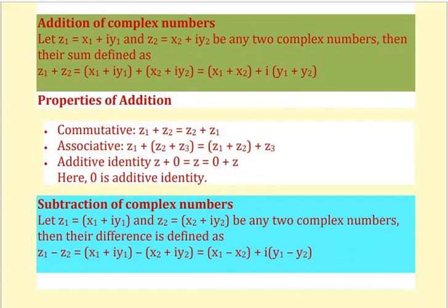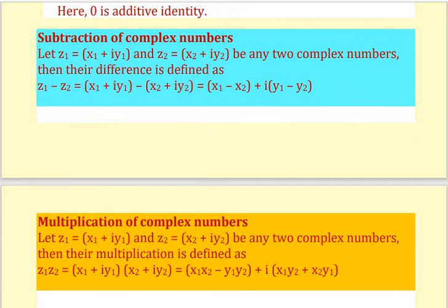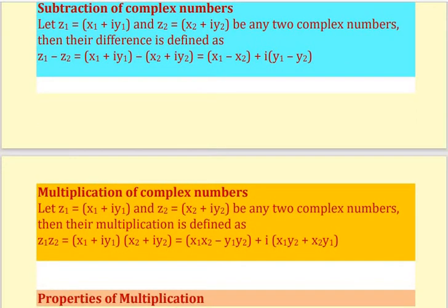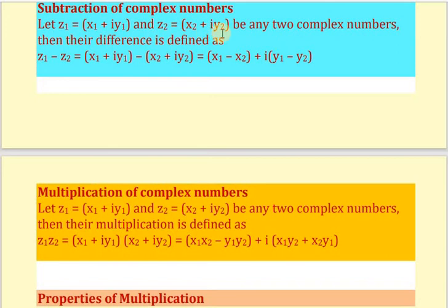Next is subtraction of complex numbers. Again, let z1 equals x1 plus iy1 and z2 equals x2 plus iy2. Then z1 minus z2 equals x1 minus x2 plus i of y1 minus y2. Just as in addition, we operate on the real parts together and the imaginary parts together separately.